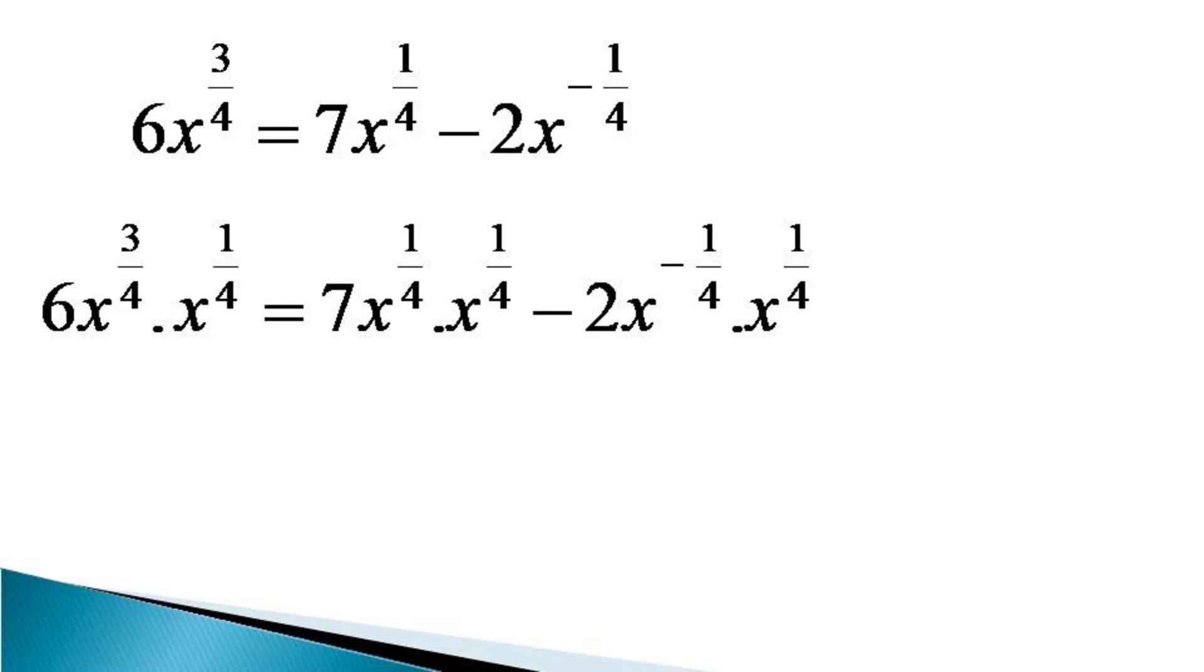The indices after multiplication get added and the equation becomes 6x raised to the power 3 by 4 plus 1 by 4 is equal to 7x raised to the power 1 by 4 plus 1 by 4 minus 2x raised to the power minus 1 by 4 plus 1 by 4.